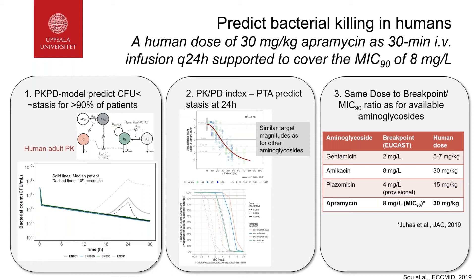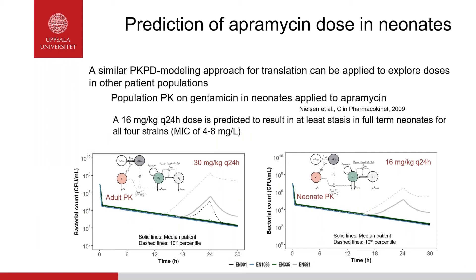Future clinical studies will tell us if the suggested efficacious dose was well predicted. By applying the PKPD model, we can also explore suitable doses for other patient populations — for example, applying a population PK model for gentamicin in neonates to show that a dose of 16 mg/kg once daily is predicted to result in at least as good an effect as the 30 mg/kg dose in adults.